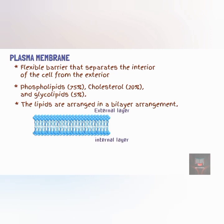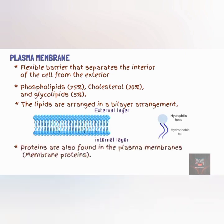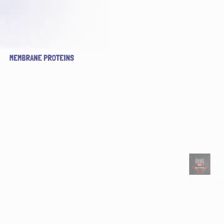The bilayer arrangement occurs because the lipids are amphipathic — that is, they have both polar and non-polar parts. Proteins are also found in the plasma membrane. The plasma membrane is not a rigid structure but rather a fluid structure, because many of its components are free to move sideways in their own half of the lipid bilayer. Membrane proteins can either be integral proteins or peripheral proteins.